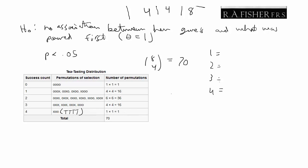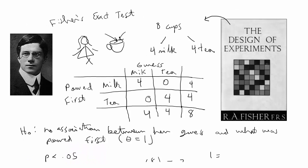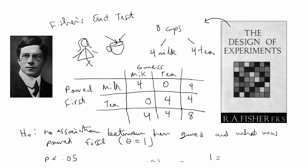In the chapter, he never actually discussed performing this experiment on the woman, although it was based on a true story. I've read later on that someone did actually test the woman, and she did get 4 out of 4 correctly.